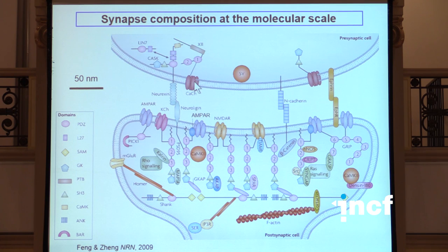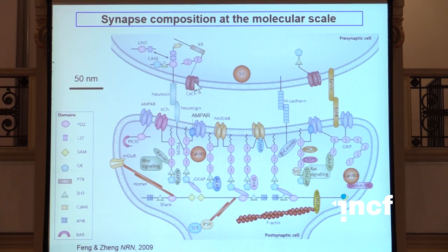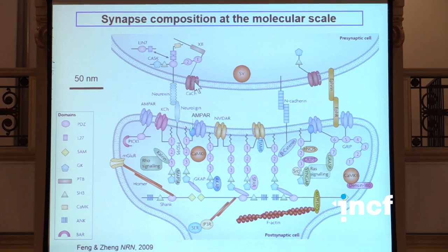That's another schematic view of that post-synaptic synapse - a whole variety of molecules, actually thousands of molecules. Most of them are known by now, at least from their molecular sequence. What we really don't know is how they are actually organised together. Although from biochemical data we have a lot of information on how they actually all interact with one another, how they are organised at the nanoscale is really something that's just beginning to be understood.